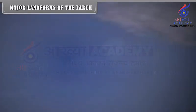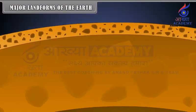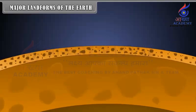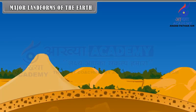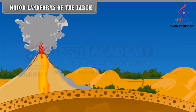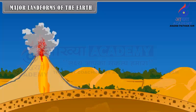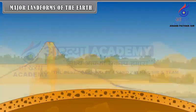Major Landforms of the Earth. The crust of the Earth is made up of rocks. This crust is neither permanent nor stable. Due to the tectonic forces, the Earth's crust is continuously changing, but the change is very slow. Earthquakes and volcanic eruptions bring abrupt changes on the Earth's surface. All these changes on the Earth's crust give birth to different types of landforms.